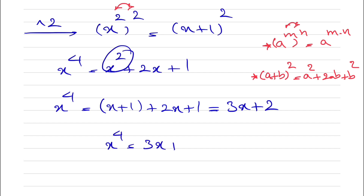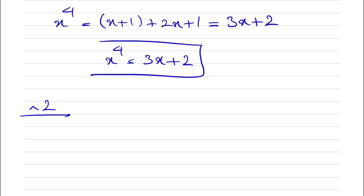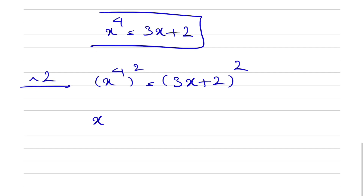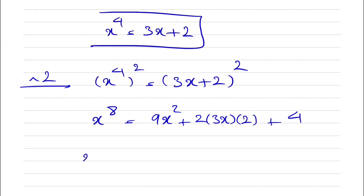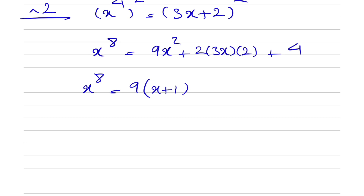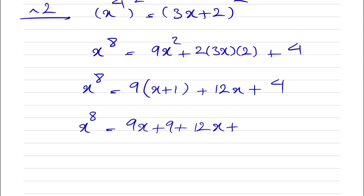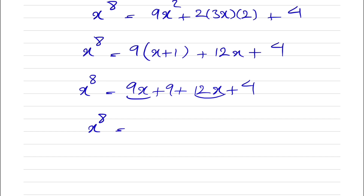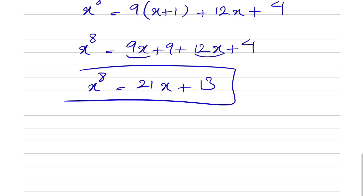Now we square x⁴ = 3x + 2 to find x⁸: (x⁴)² = (3x + 2)², so x⁸ = 9x² + 12x + 4. Substituting x² = x + 1 gives x⁸ = 9(x + 1) + 12x + 4 = 9x + 9 + 12x + 4 = 21x + 13.